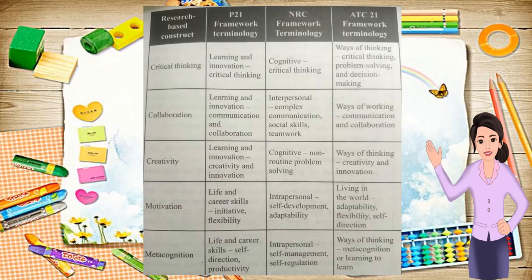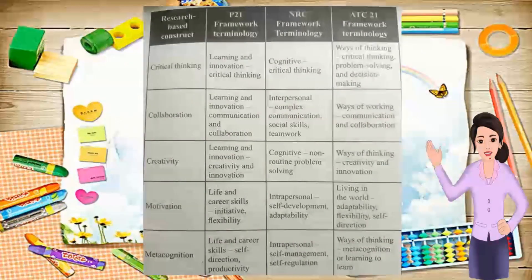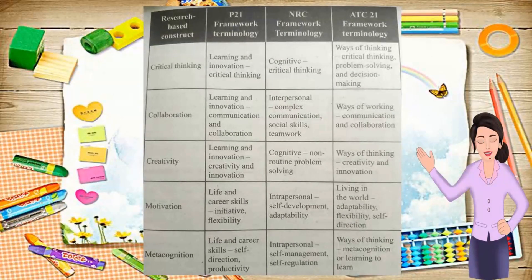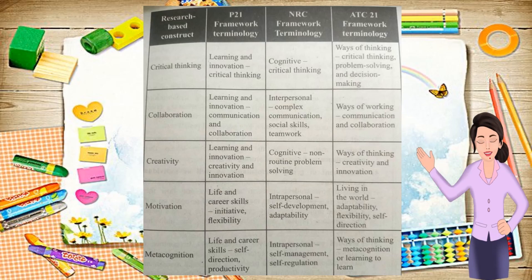We also have a table showing other transversal competencies of the 21st century. I advise you to read it carefully as it includes different terminologies — for example, in critical thinking there are three terminologies. Please study and familiarize yourselves with them.